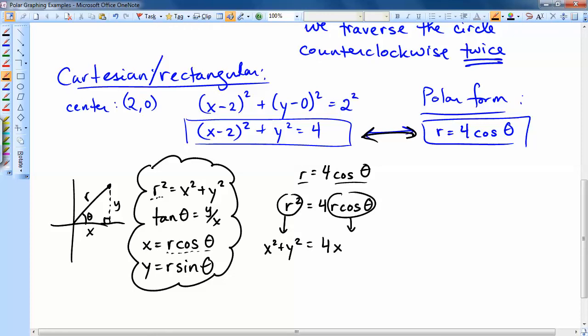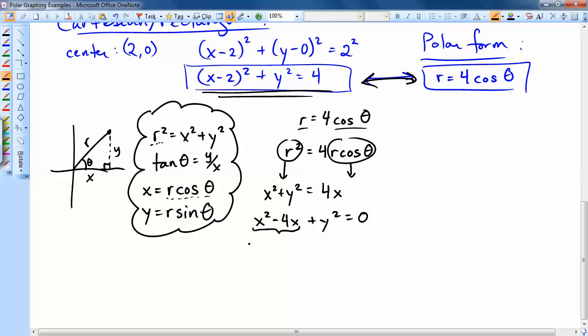And now I'm getting closer to this form. So let me bring the 4x over. And I'm going to complete the square on this part. So in order to complete the square, we take half of that negative 4 and square it. So it's plus 4. And then plus y squared. And since I added 4 over here, I need to add 4 over here. And now I can complete the square. This is going to turn into x minus 2 squared plus y squared equals 4.